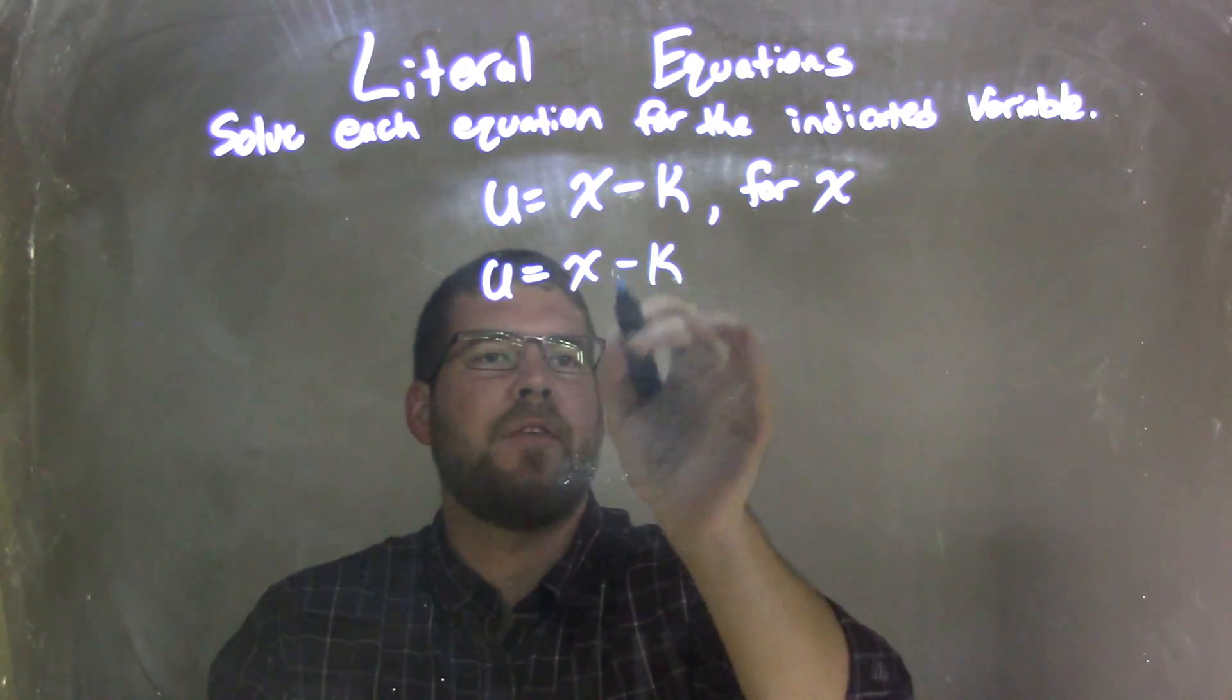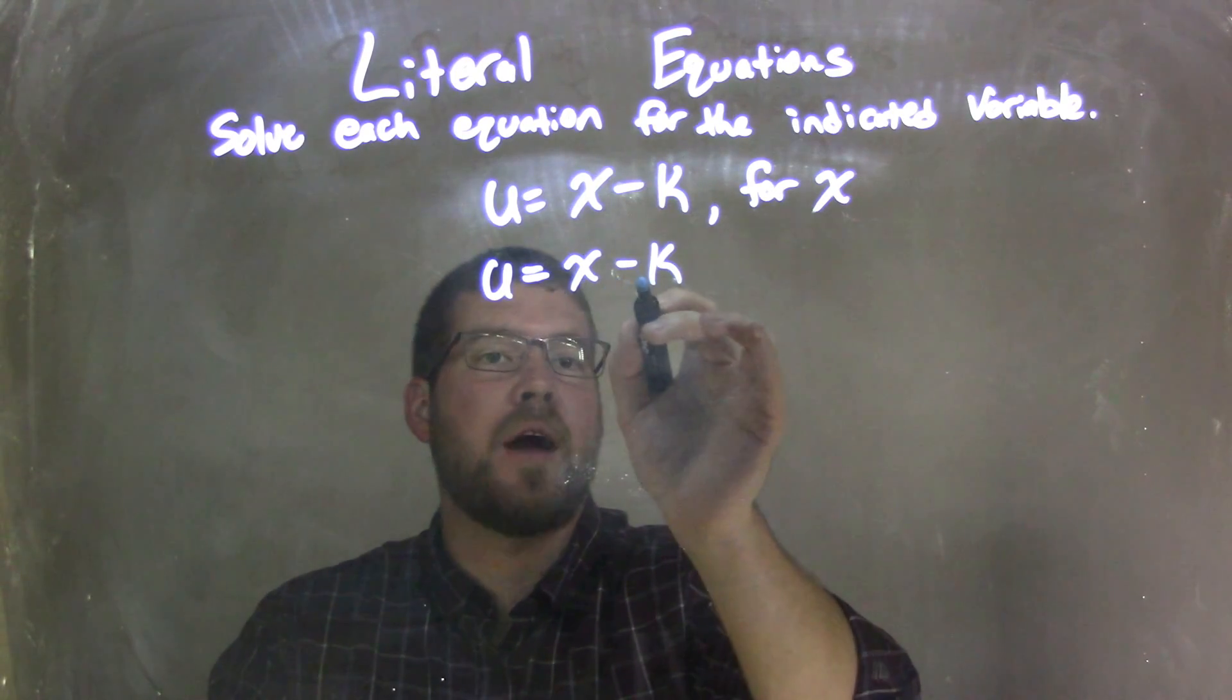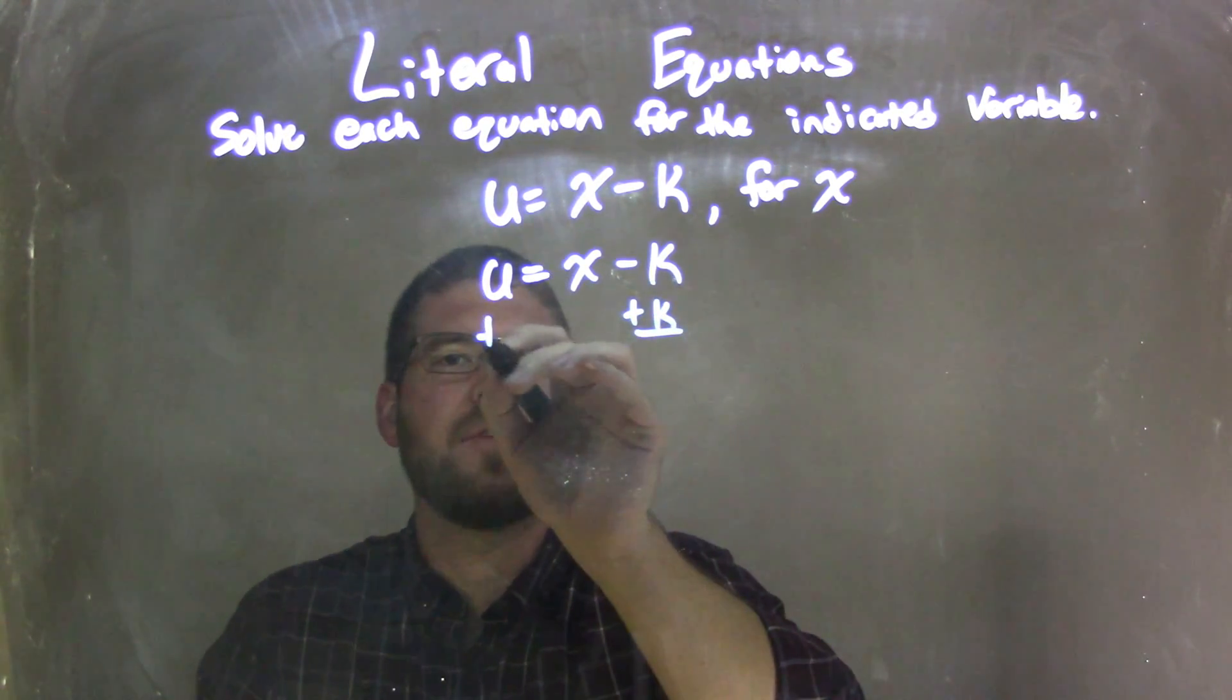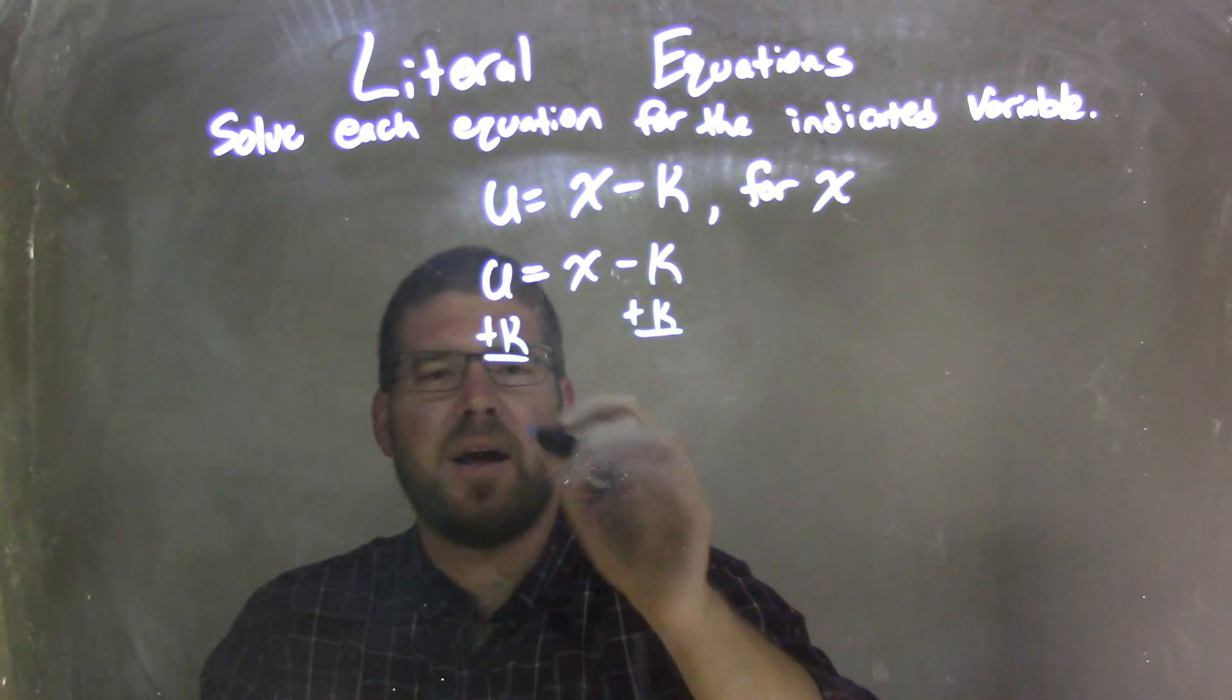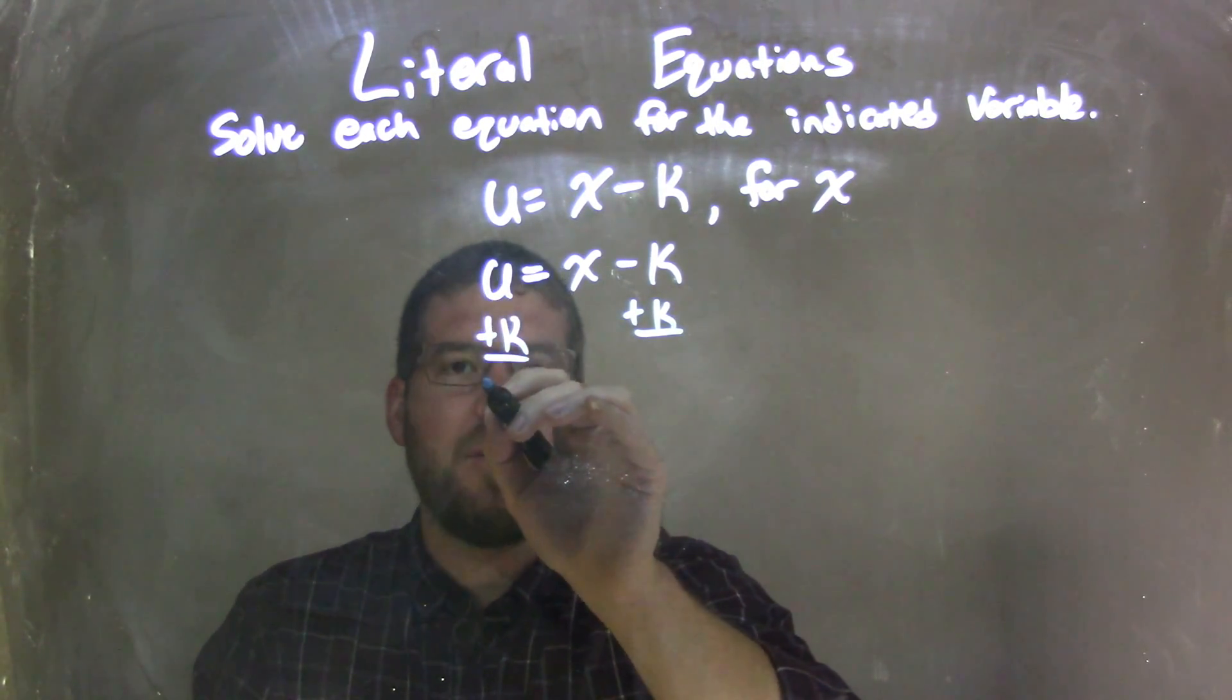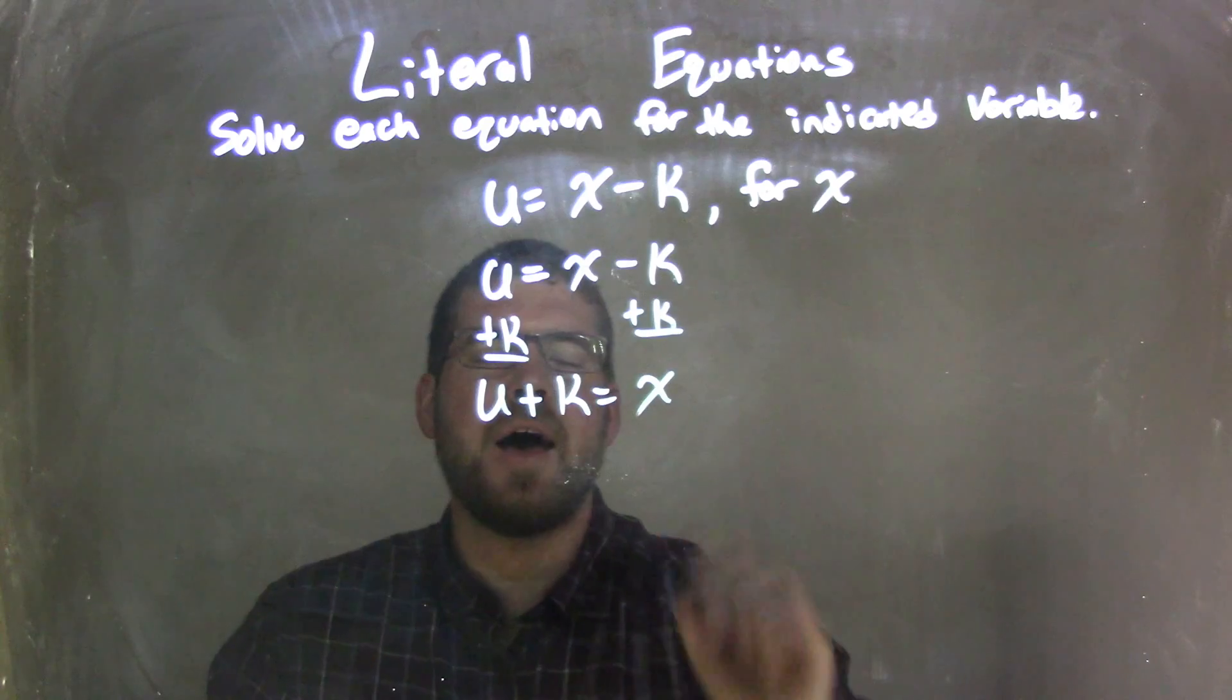Well, to get x by itself, I have to move the k over. The opposite of subtraction is addition, so I'm going to add k to both sides. u and k are not like terms, so I'm going to keep them separate, and we have u plus k, and that equals x.